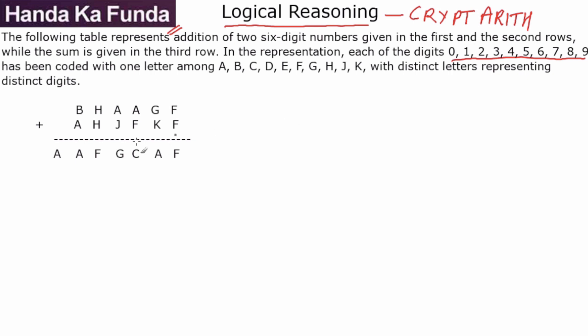That's the deal. Two six-digit numbers are being added up and as a result, you are getting a seven-digit number.